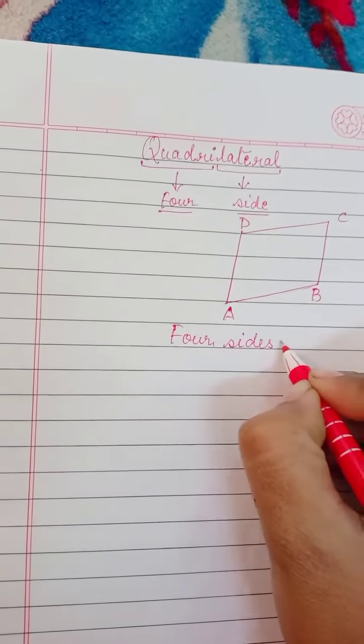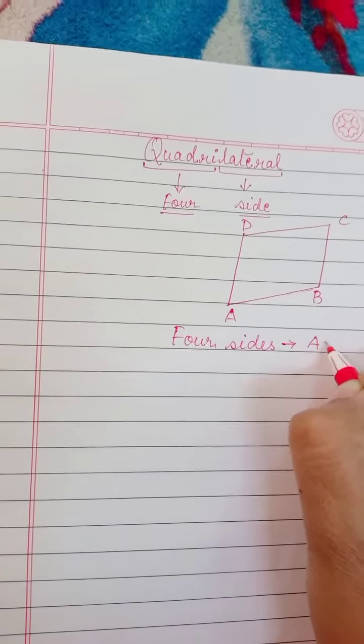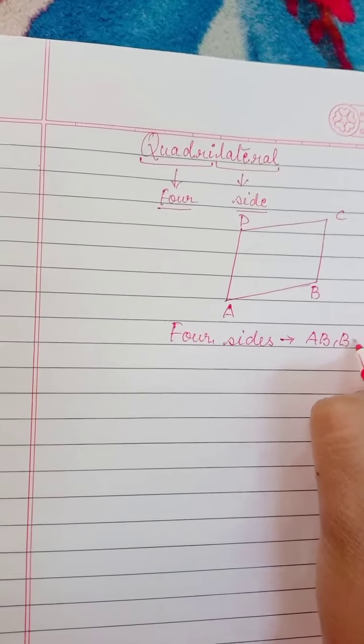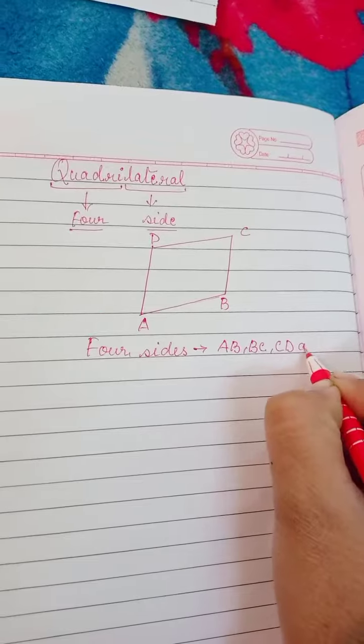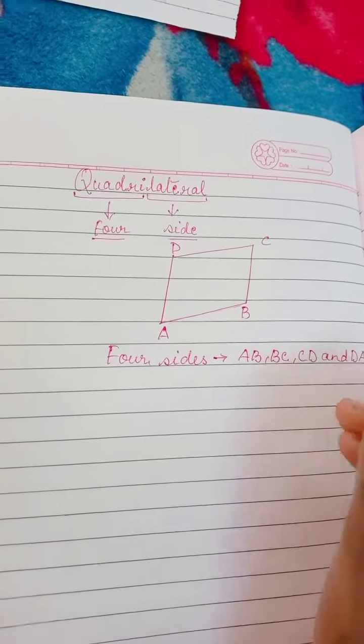Okay, four sides which are AB, BC, CD and DA. Okay,